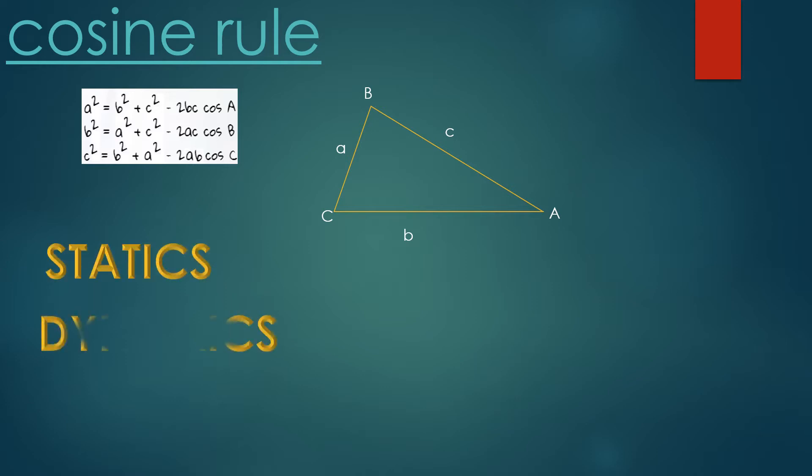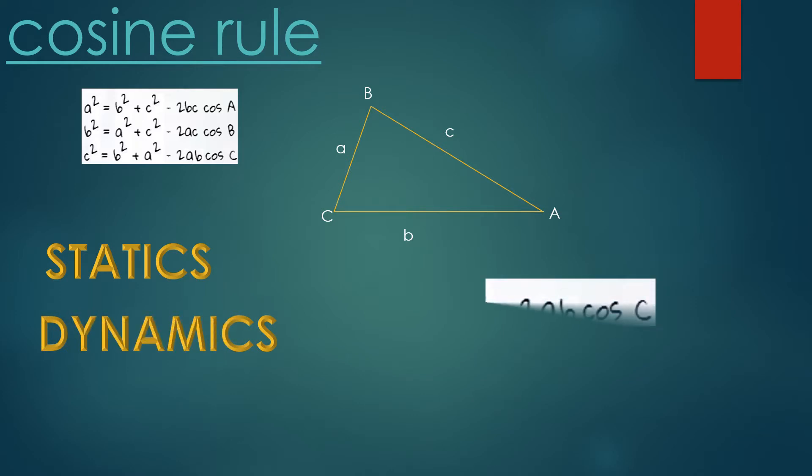If you look at this ABC triangle, then as per the statement of the cosine rule, we have c² = b² + a² - 2ab cos C. Here, small letters a, b, c are used to name sides, and capital letters A, B, C are used for angles.